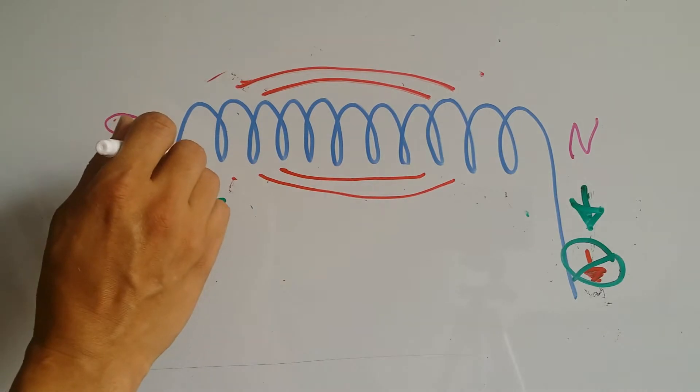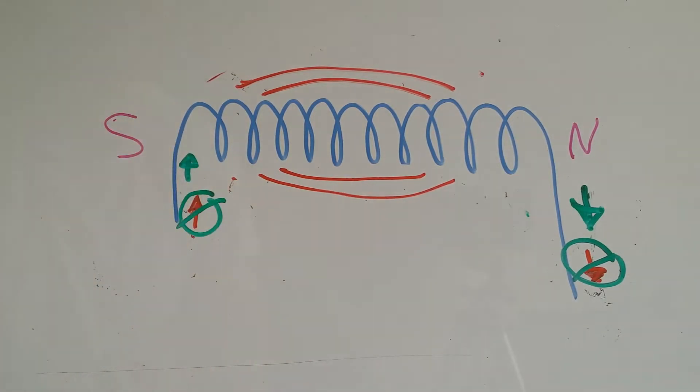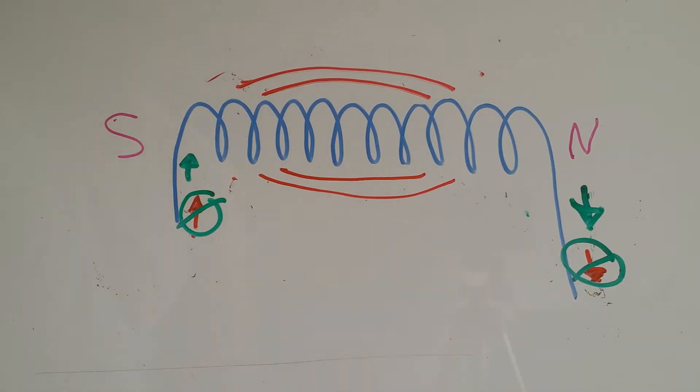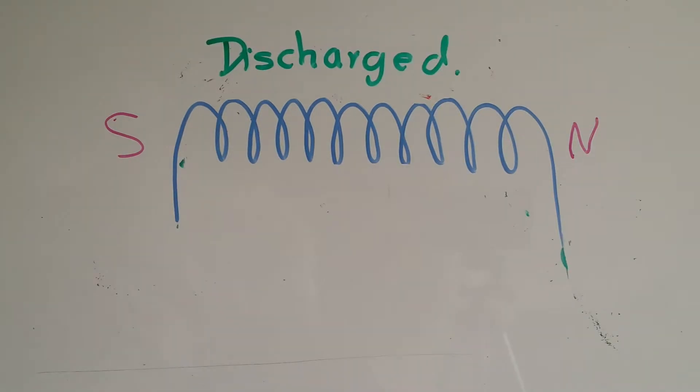That electron flow is in the same direction as the original current flow that created the inductor. When the inductor is discharged, then there is no current flow. It's just a piece of wire without power.